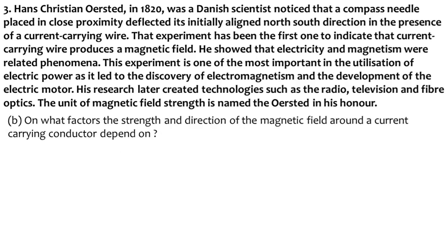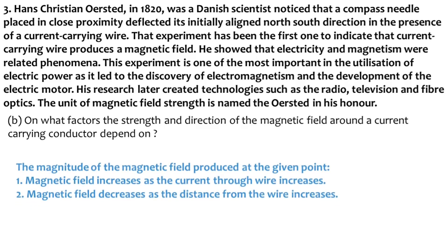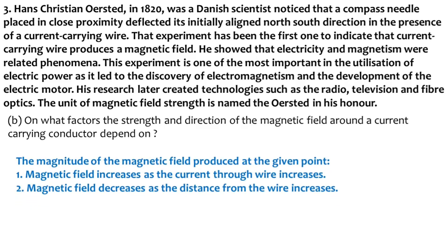Question B: on what factors do the strength and direction of the magnetic field around a current-carrying conductor depend? The two factors are the current and the distance from the wire. When current increases, the magnetic field also increases. And when the distance from the wire increases, the magnetic field strength decreases.